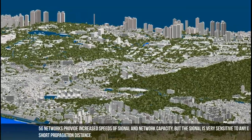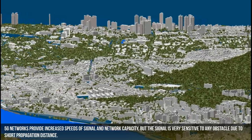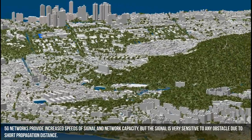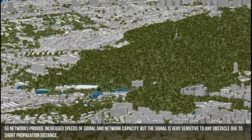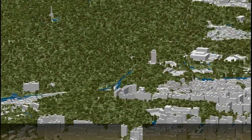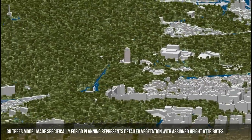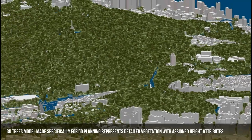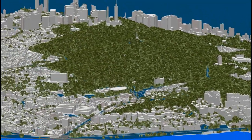5G networks provide increased speeds of signal and network capacity, but the signal is very sensitive to any obstacle due to short propagation distance. A 3D trees model made specifically for 5G planning represents detailed vegetation with assigned height attributes.